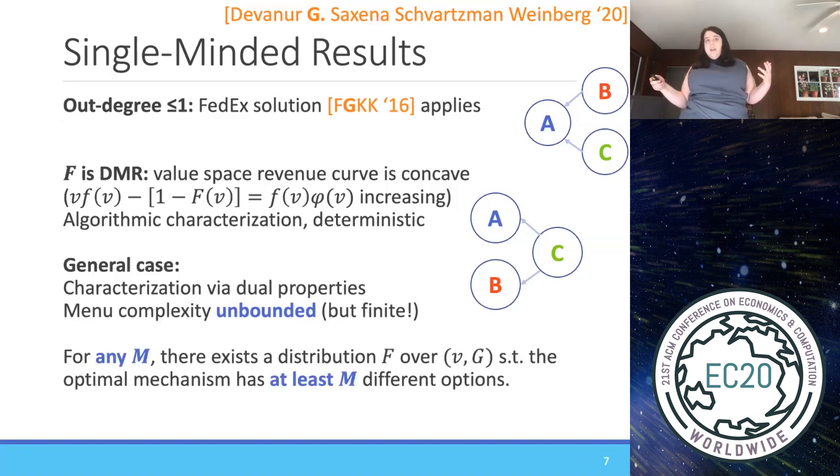In the general case, our characterization is much less clear. I'll talk about it later, but it's via dual properties. And it is not deterministic whatsoever. In fact, the menu complexity is unbounded. There are unboundedly many options offered to the buyer. However, it's still finite. And so what does unbounded mean? It means that for any M, there exists some buyer distribution over the value and bundle pairs, such that the optimal mechanism offers at least M different options to the buyer. And so this is what I'm going to dig into for the rest of the talk.